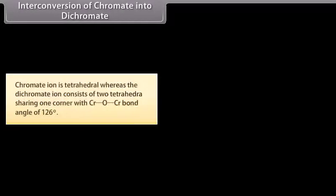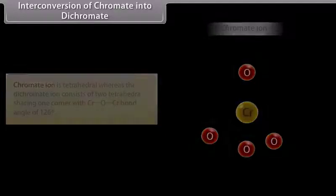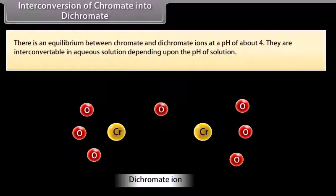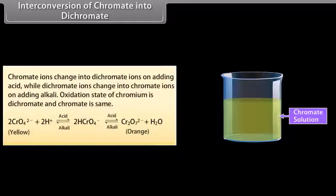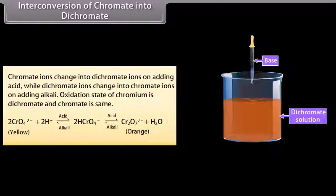The chromate ion is tetrahedral, whereas the dichromate ion consists of two tetrahedra sharing one corner, with a Cr–O–Cr bond angle of 126°. There is an equilibrium between chromate and dichromate ions at a pH of about 4. They are inter-convertible in aqueous solution depending upon pH: chromate ions change into dichromate ions on adding acid, while dichromate ions change into chromate ions on adding alkali. The oxidation state of chromium in both dichromate and chromate is the same.